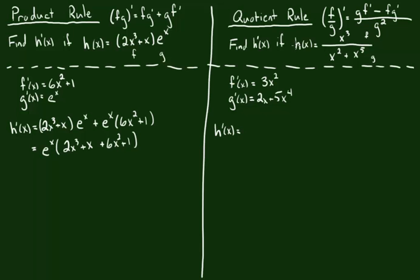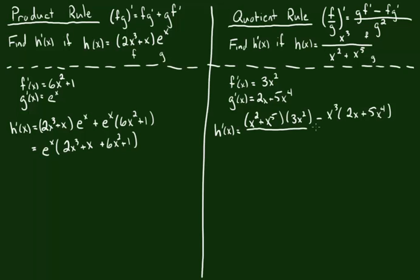We're assembling the derivative of h using the quotient rule. It's going to be the bottom function — in our case, x squared plus x to the fifth — times the derivative of the top, which is 3x squared, minus the top function, which is x cubed, times the derivative of the bottom, which is 2x plus 5x to the fourth. All of that sits in our numerator. The denominator is the original function g squared — we're not squaring it out, just writing squared and leaving it.